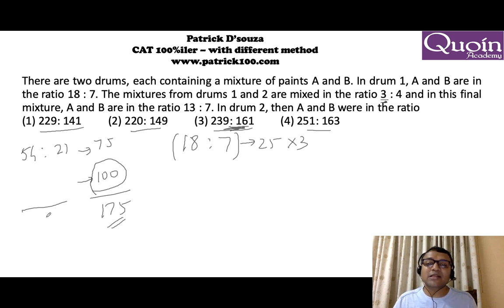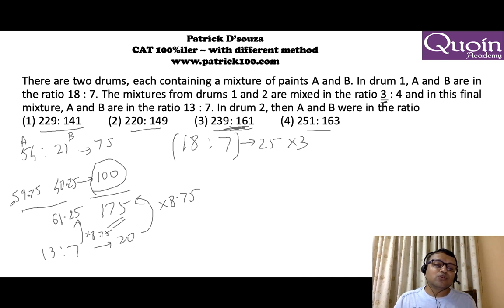There's also a direct way of doing it. This 175 is basically given as 13 to 7. 13 to 7 is 20. 20 into 8.75 gives you 175. So 7 into 8.75 is 61.25. You can use the calculator if you want. This is 61.25, this is 21. Balance is 40.25. That is for B. If out of 100, 40.25 is B, A will be the remaining which is 59.75. To find the actual ratio, you can multiply by 4. When you multiply by 4, you get the value as 239 to 161 which is third option.